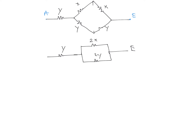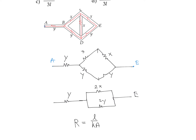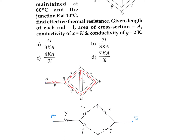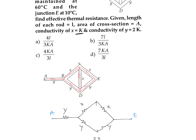We write the resistance of X and Y in terms of length, area, and conductivity. Resistance R = L / (K·A). For X, conductivity is K, so resistance of X = L / (K·A). For Y, conductivity is 2K, so resistance of Y = L / (2K·A).